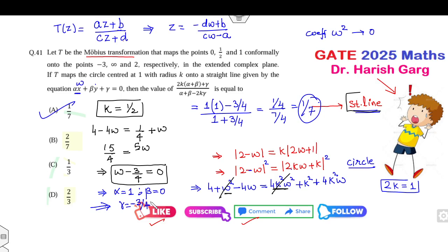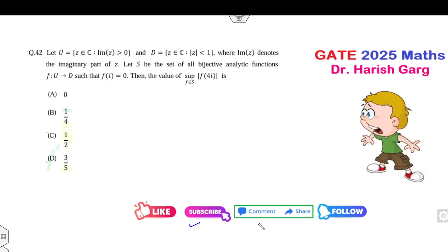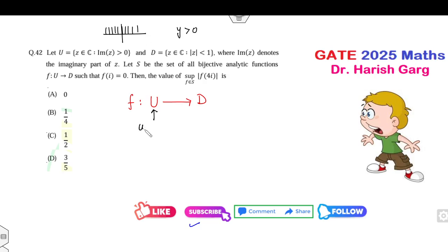So the target was simply to transform the Möbius mapping and find where the circle maps to a straight line — and the answer is 1/7. Now look at the next question. F is a mapping from U to D, where U is the upper half-plane (imaginary part > 0, i.e., y > 0) and D is the unit disk.